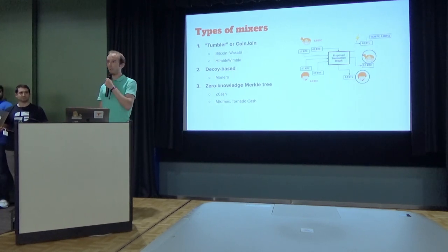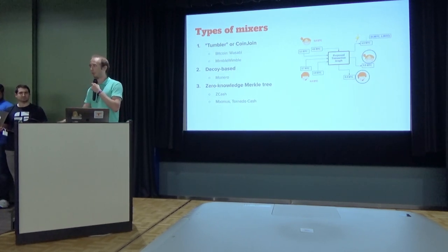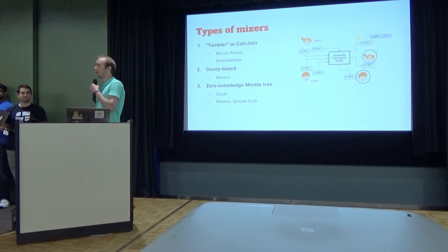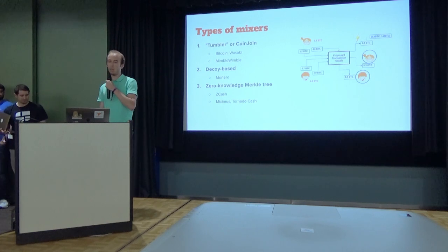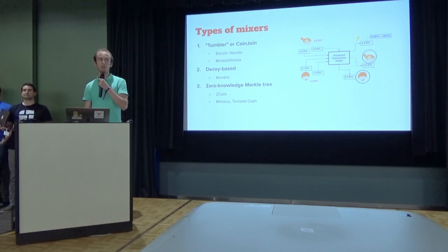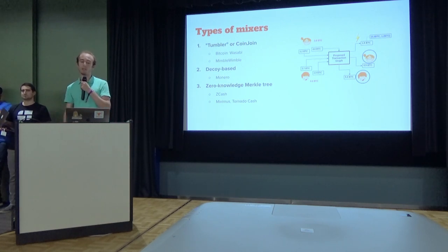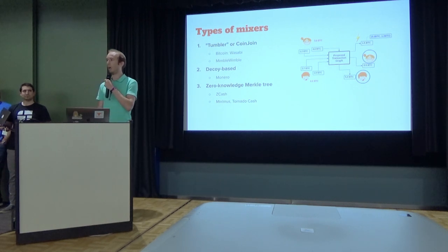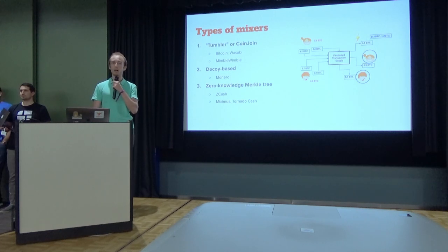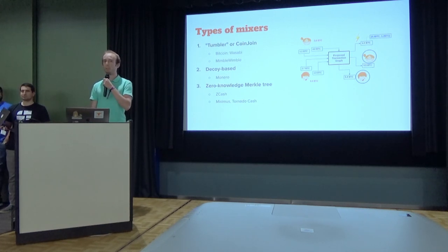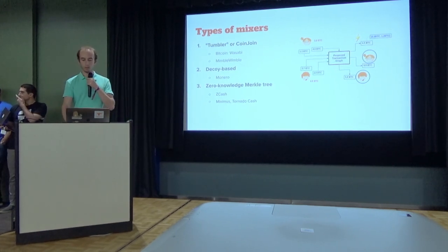There are a few mixing technologies that exist these days. The first one is CoinJoin — that's what's used in Bitcoin, specifically for example in the Wasabi wallet, and it's also used in Mimblewimble and Grin. Then there's DecoyBase, which is used in Monero. And finally, there are zero-knowledge Merkle tree-based protocols. The best-known one is Zcash, and there are a few Ethereum mixers built on top of that protocol as well, including Miximus and Tornado Cash.